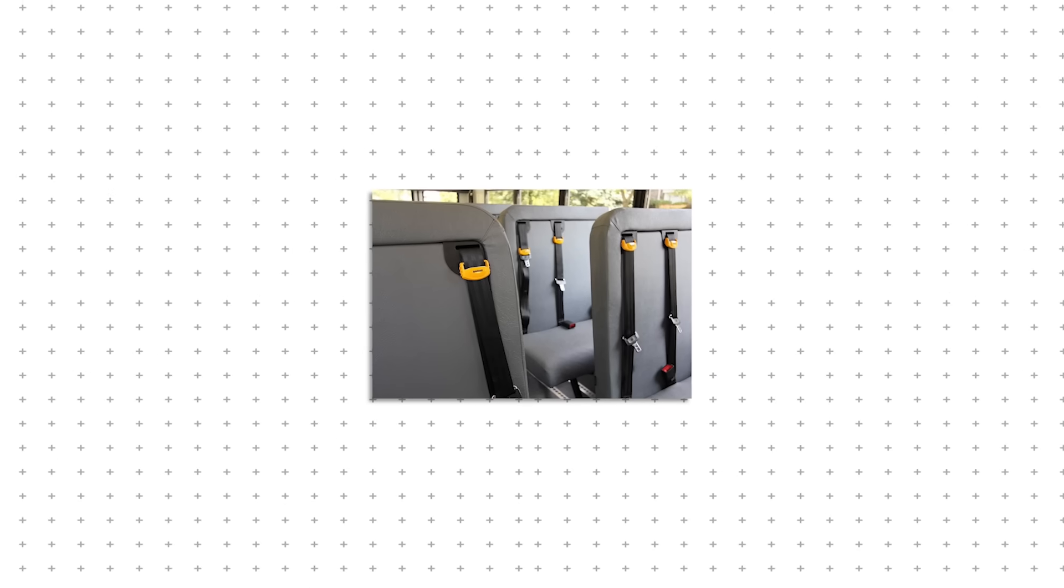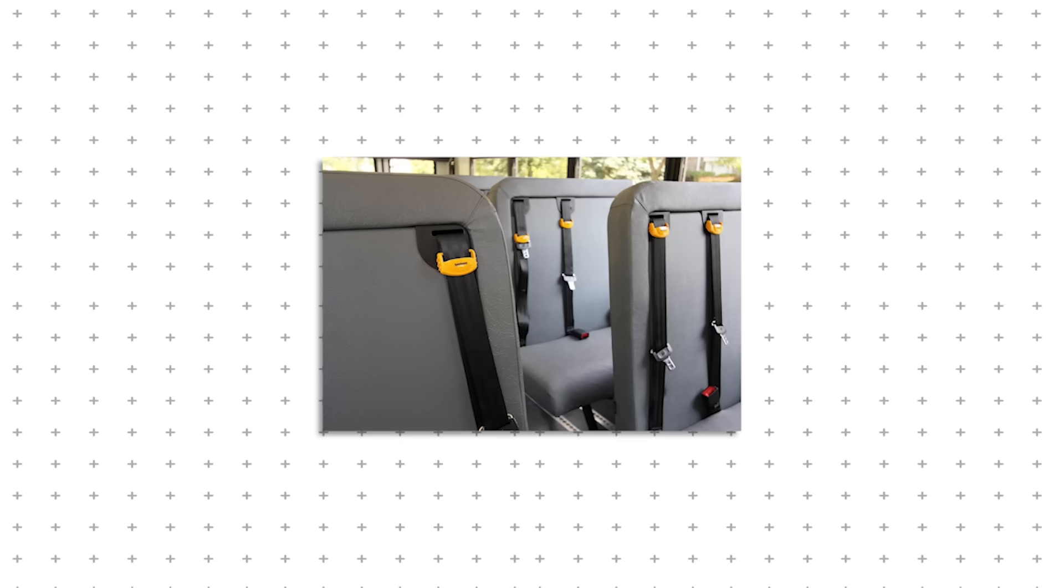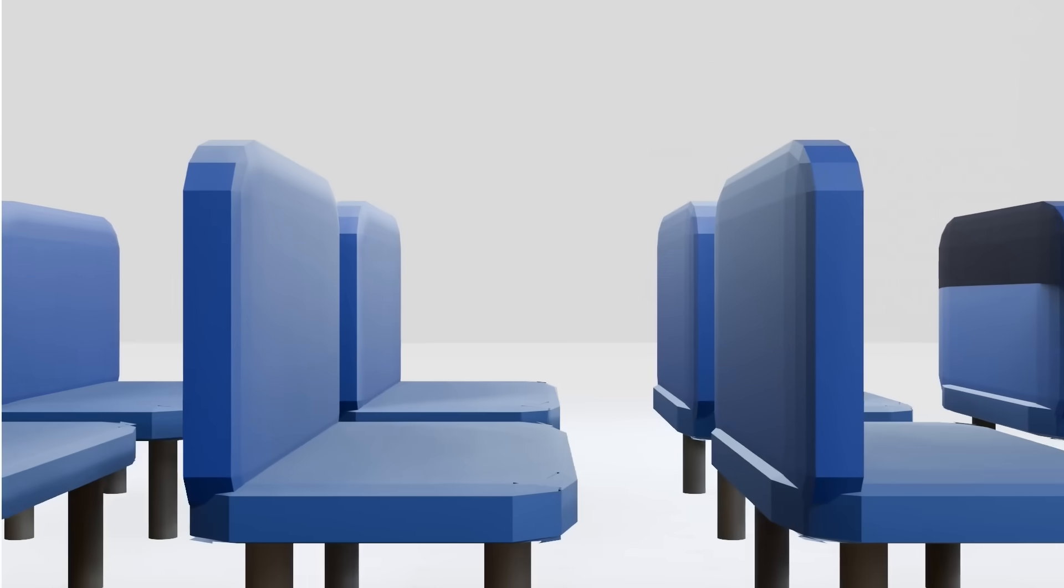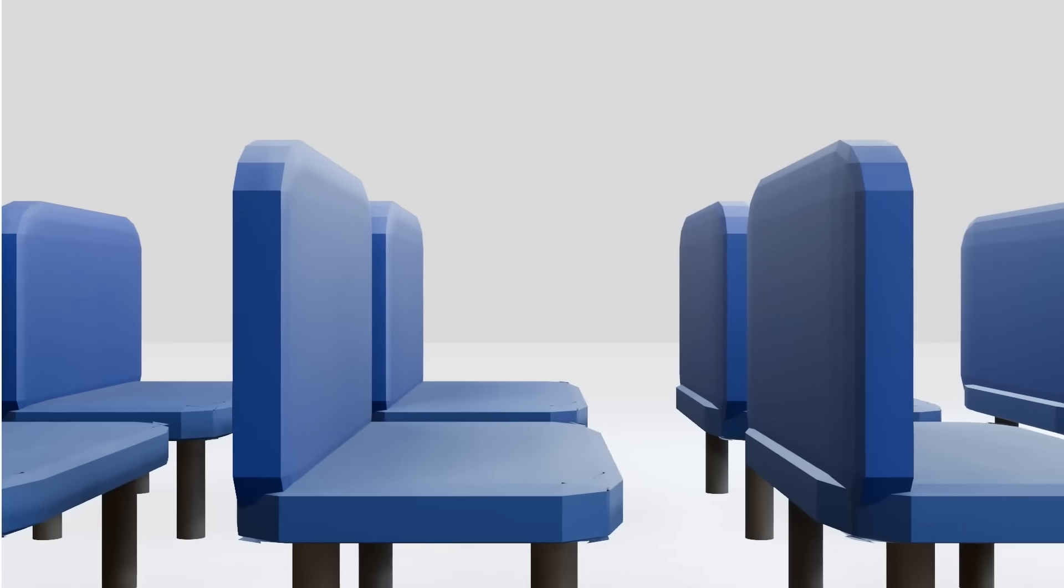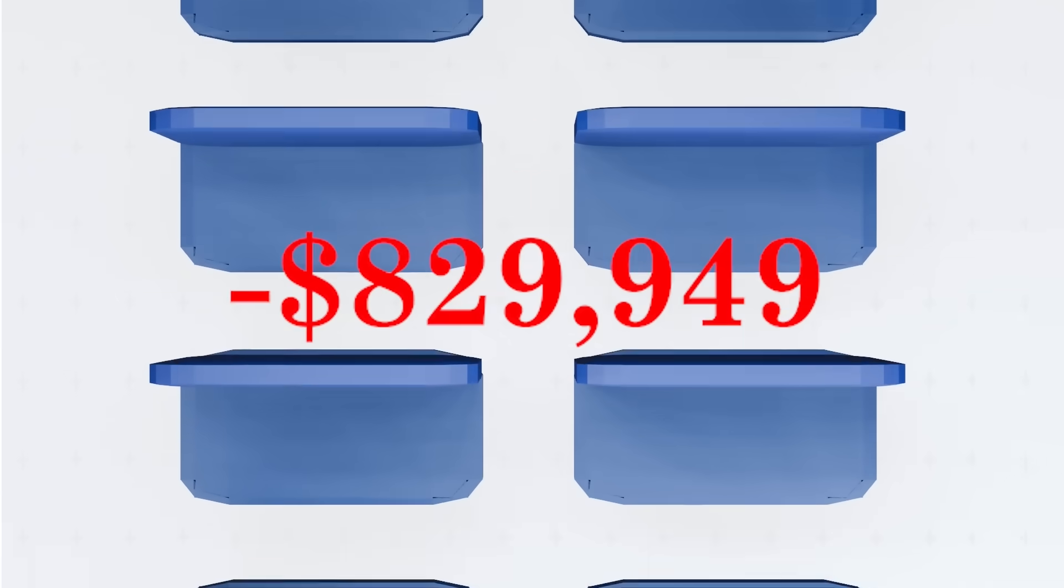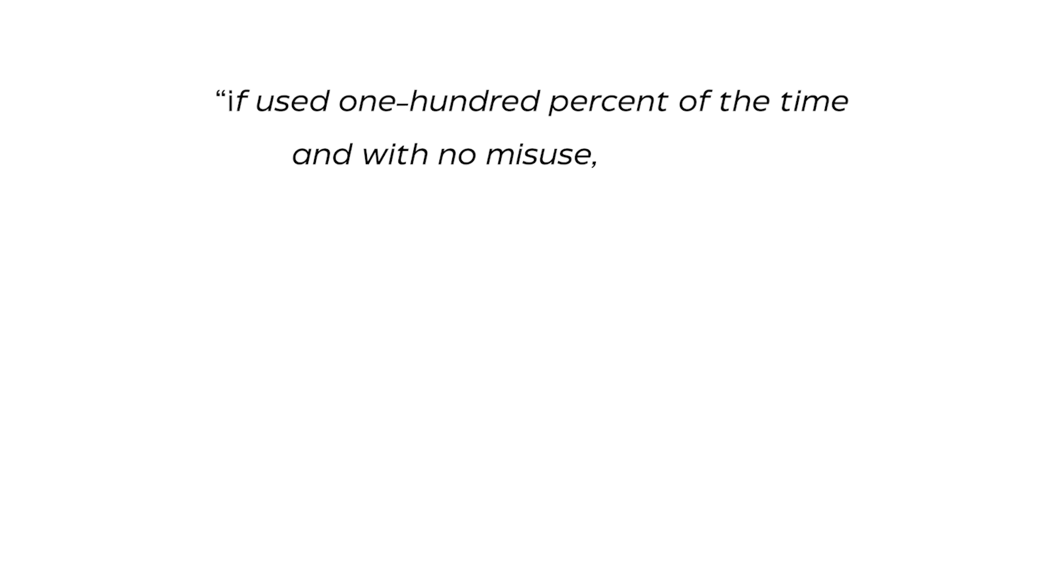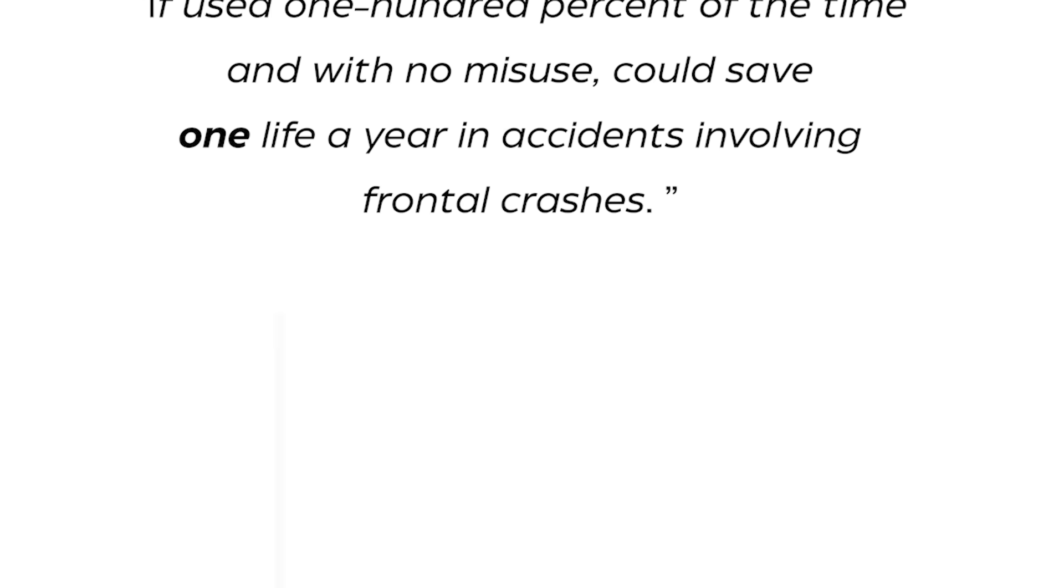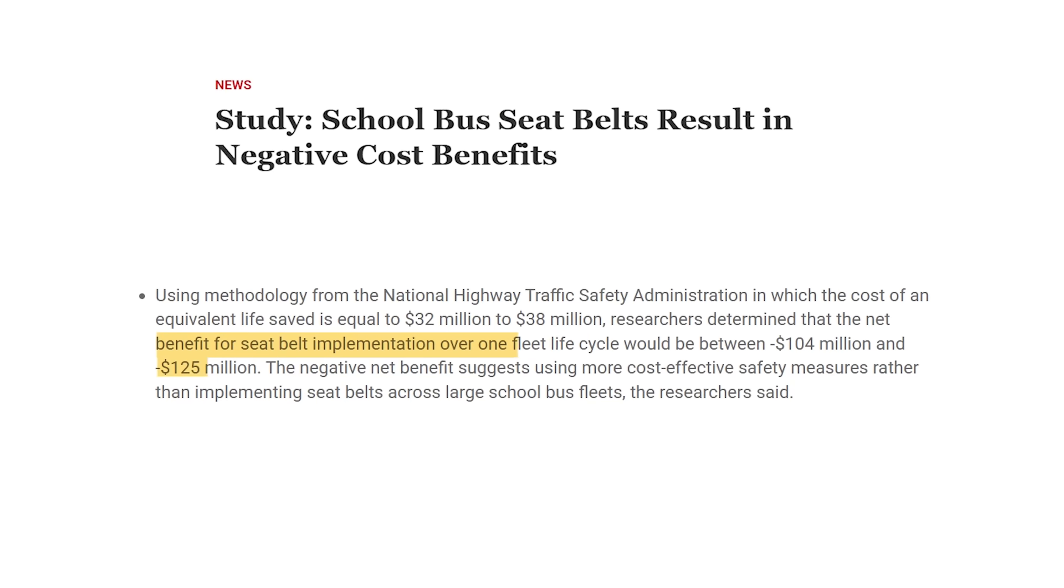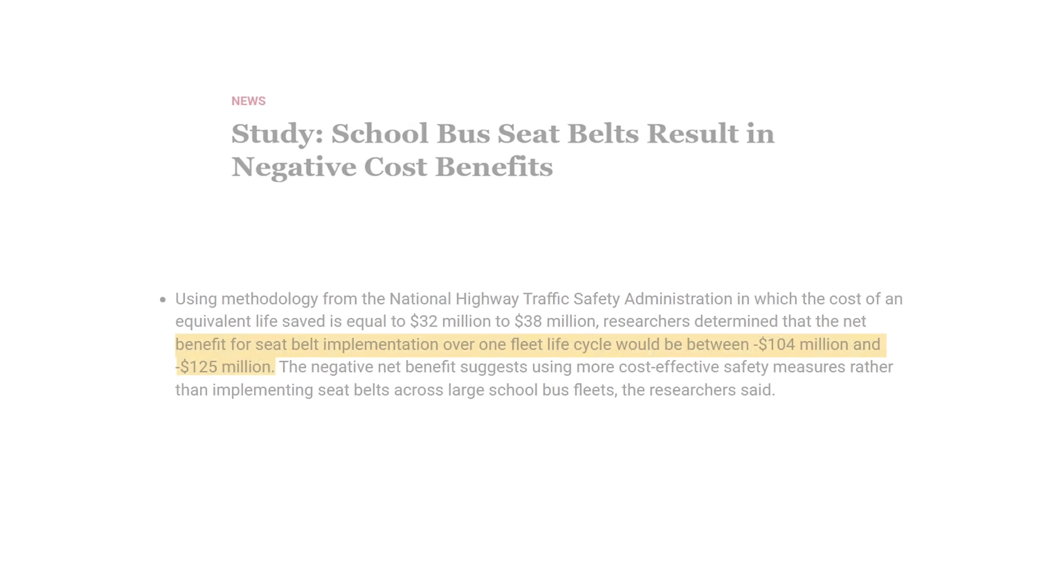One of the biggest debates in school bus safety is seatbelts. Should they be mandatory? Some U.S. states say yes. Most say no. Their reasoning? Compartmentalization already protects students from crashes. Adding seatbelts wouldn't change much. On top of that, retrofitting every school bus with seatbelts would cost billions. And according to studies, the impact on student safety would be minimal. School bus crash fatalities are already incredibly rare. So is it worth spending billions on a feature that might only save a handful of lives per decade? Probably not.